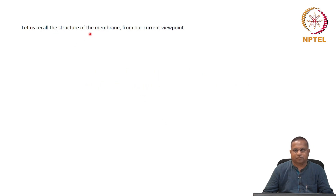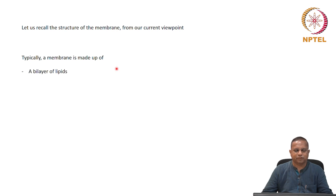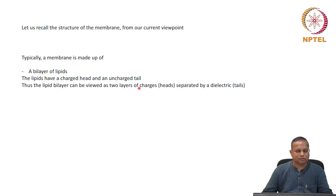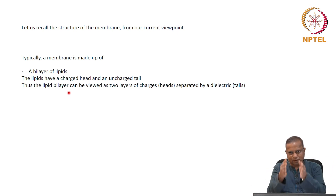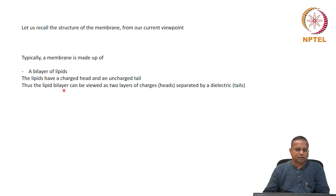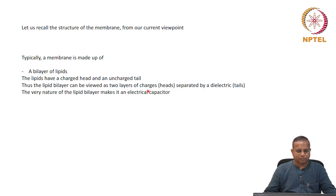Let us recall the structure of the membrane — we know this from the Singer-Nicholson model. Typically, a membrane is made up of a lipid bilayer. These lipids have a charged head and an uncharged tail. The lipid bilayer can be viewed as two layers of charges, or the heads, separated by dielectric tails. Therefore, the very nature of the lipid bilayer makes it an electrical capacitor.